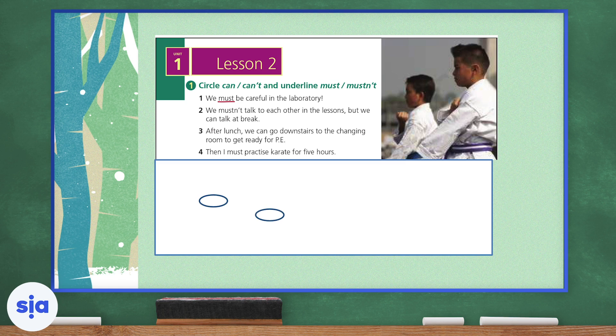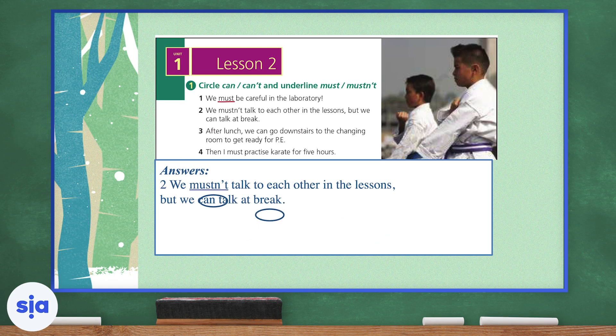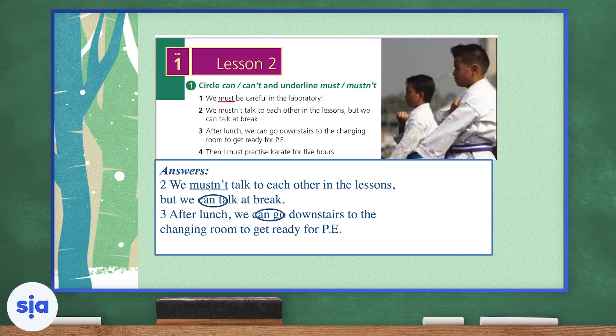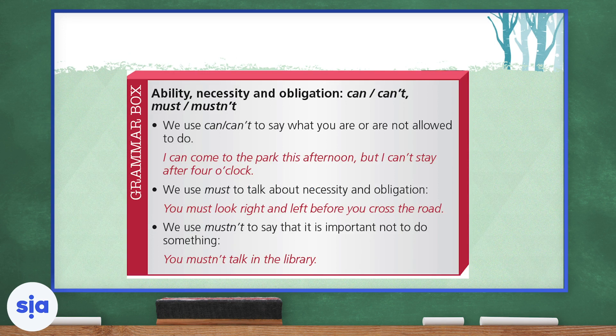Number two: 'We mustn't talk to each other in the lessons, but we can talk at break.' We're going to underline mustn't. Number three: 'After lunch, we can go downstairs to the changing room to get ready for PE.' We're going to circle can because it shows we have an option of whether to do something or not. Number four: 'Then I must practice karate for five hours.' We're going to underline must because it shows obligation.